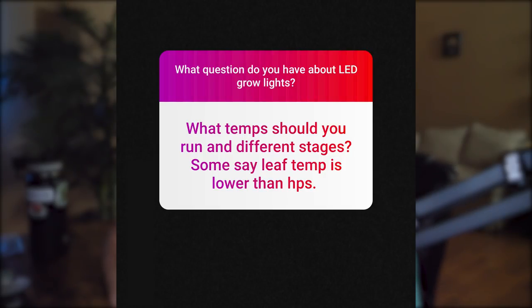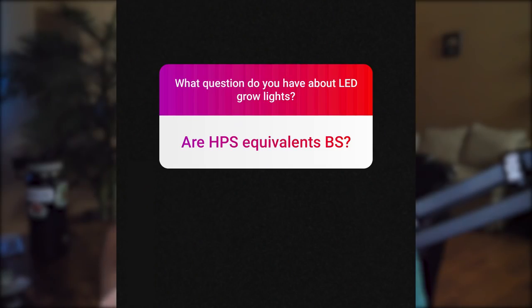What temps should you run at different stages — some say leaf temp is lower than HPS? We touched on this earlier regarding HPS increasing leaf temp. I usually aim for a leaf surface temperature of 80–82°F throughout the entire grow. I'm not as worried about it during the seedling stage or early veg — some would argue it's safer to go on the lower side then — but 80–82°F Fahrenheit leaf surface temp is my general target.